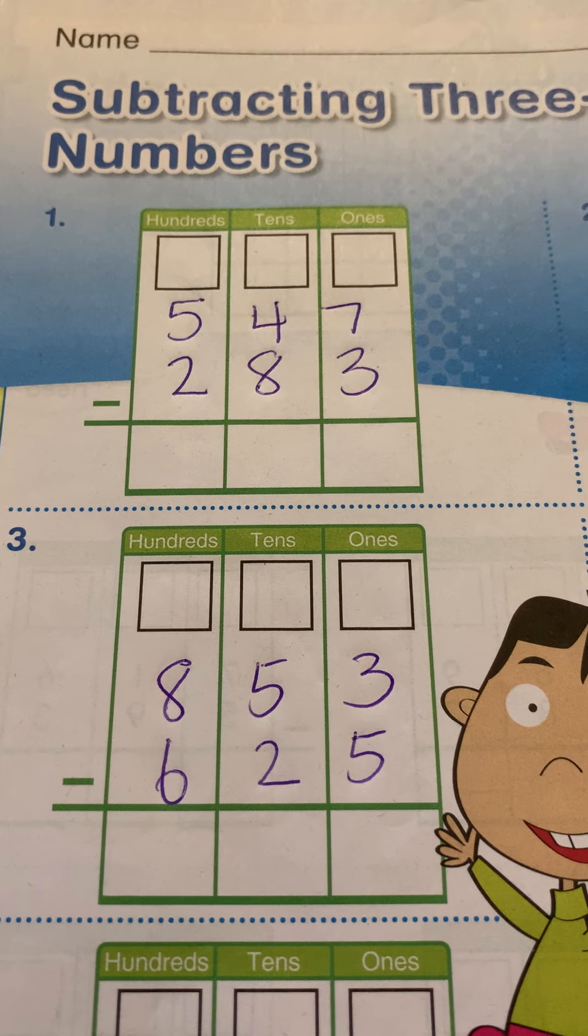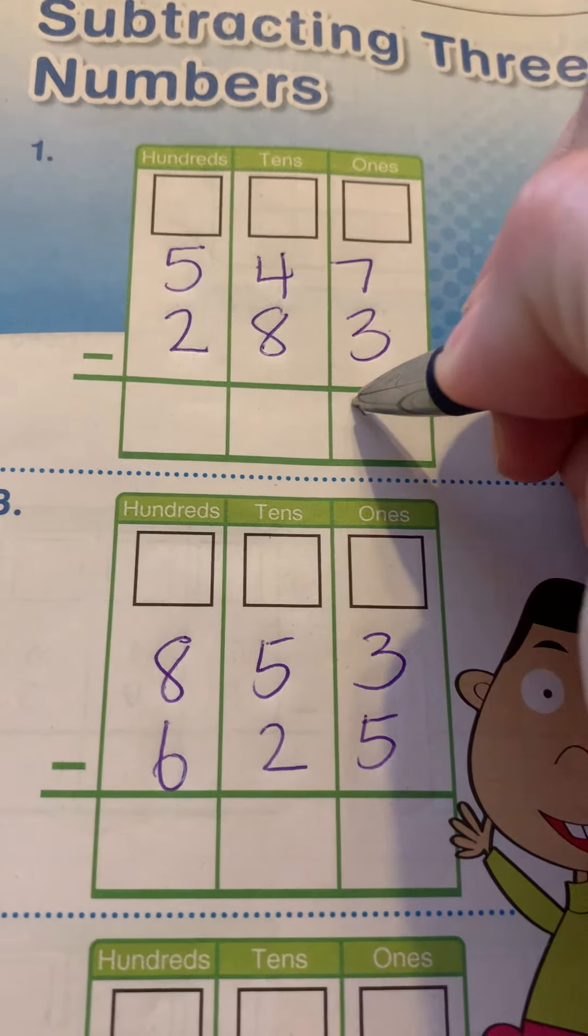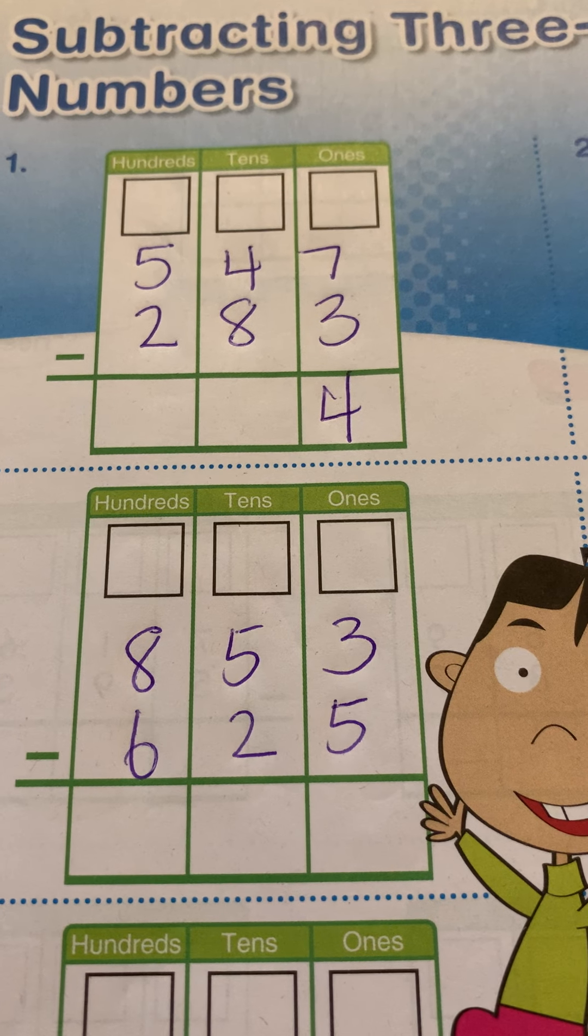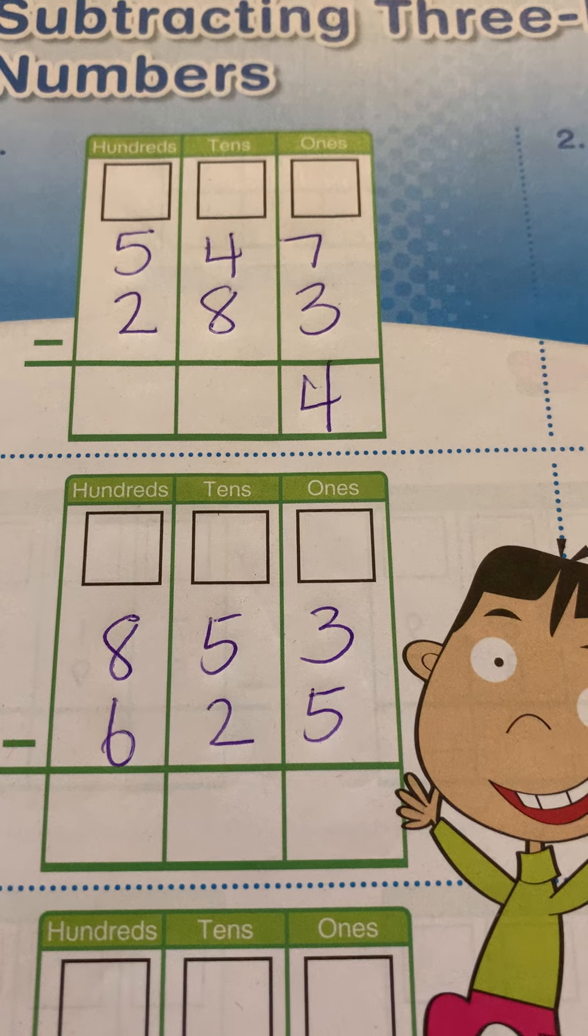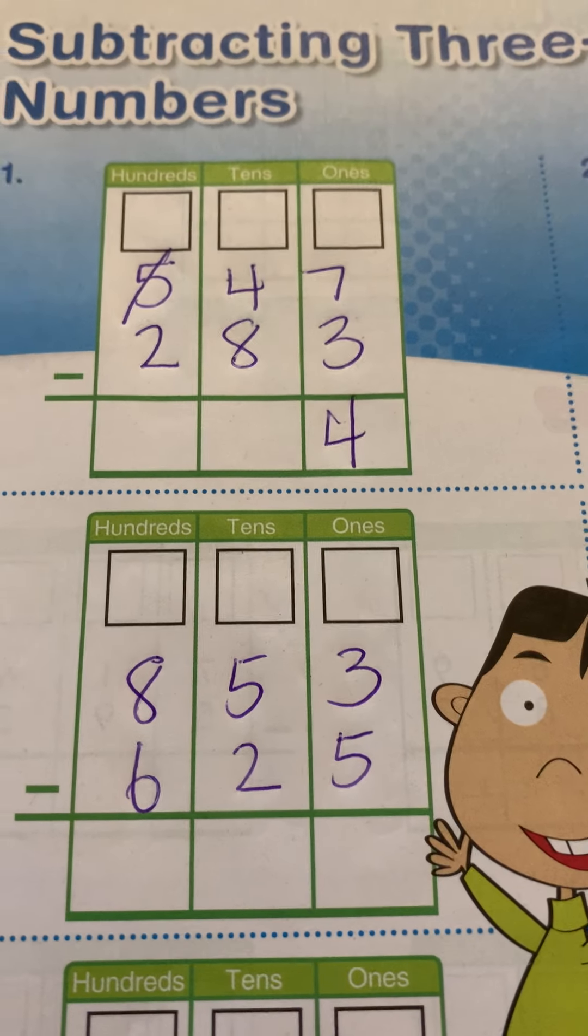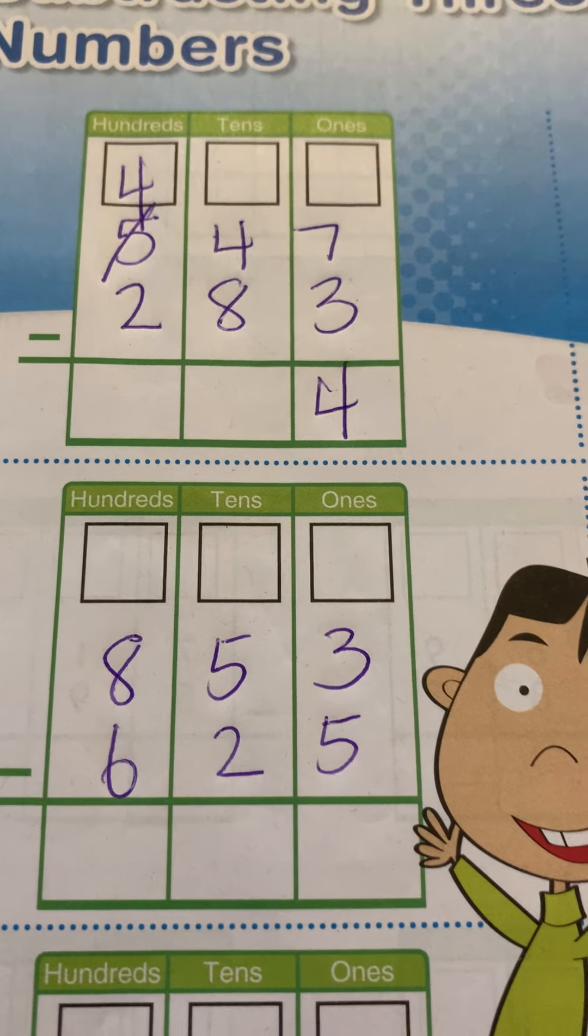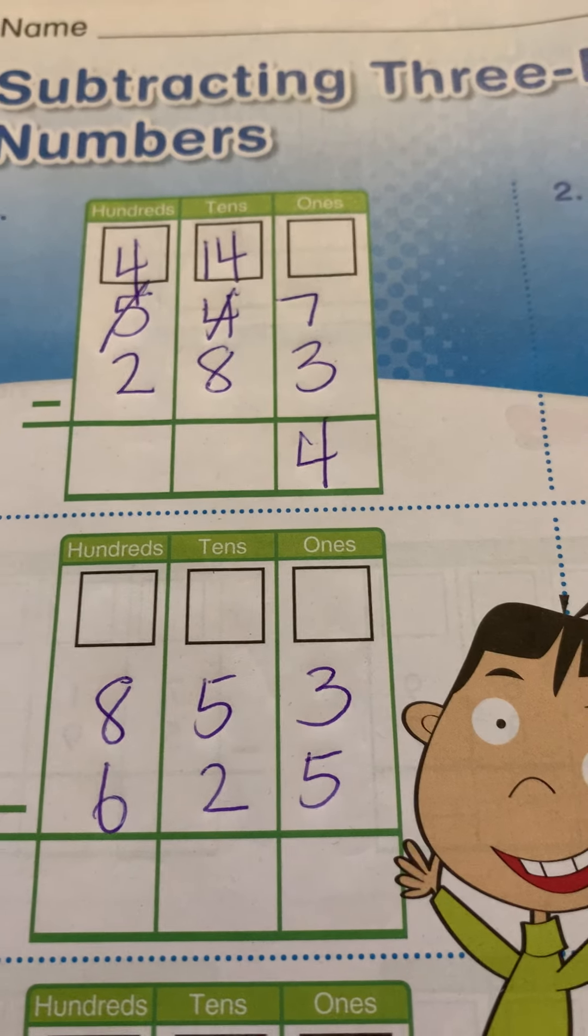First, we always start with the ones. So seven minus three is four. Four minus eight. You can't. So I have to go to the hundreds and cross off the five and make it a four. Make the four a 14. So 14 minus eight. Eight goes in our head.